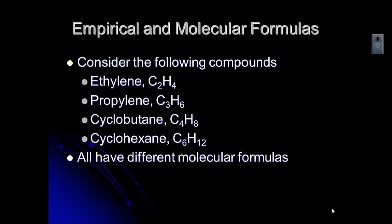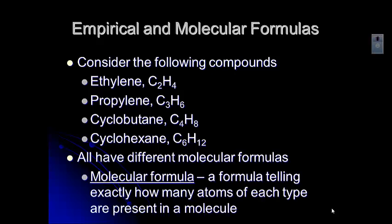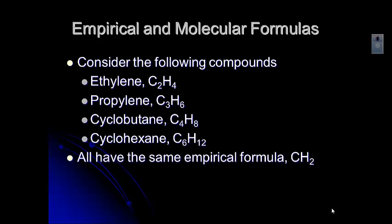They all have what are called different molecular formulas. The molecular formula is the formula that tells you how many of each type of atom are in a molecule. So you can see that different numbers of carbons and hydrogens are in those particular compounds. But when you look at those and look at the similarities, you probably notice that they have the same what we call empirical formula — a ratio of carbon to hydrogen of one to two. So they have the same elements, and they are in the same ratio.